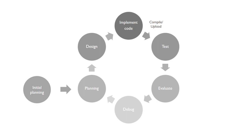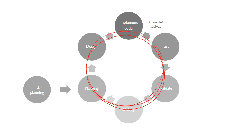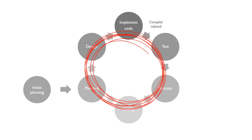If the software doesn't meet the specification, you'll find some errors. Then you'll debug those errors and go around the cycle again — you might have to re-plan, find a better way of doing it, redesign that part of the software, re-implement the code, retest it, and re-evaluate it. You just keep going around and around this loop, possibly many times. Finally, you'll evaluate it, find it works as intended, and then you can move on to deployment.